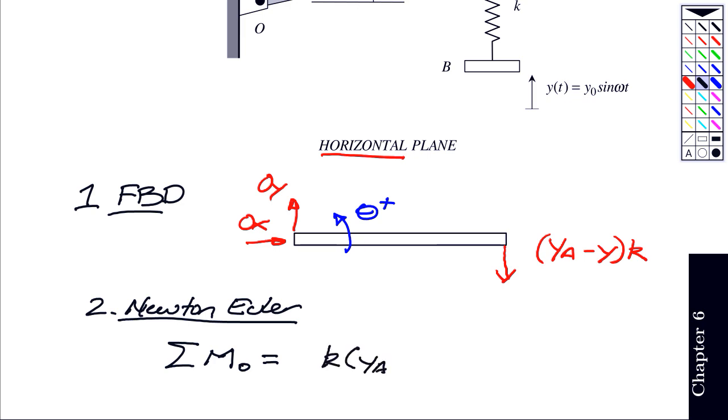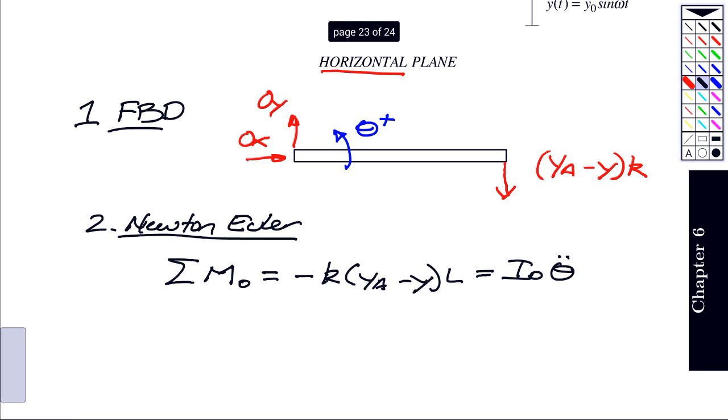So our spring force is going to have a moment arm of L, and it's going to be in the minus theta direction. Io, the mass moment of inertia about O, times theta double dot, where Io is equal to the mass moment of inertia about the center mass, plus Ig, plus m L over 2 squared. So this ends up being one-third m L squared.